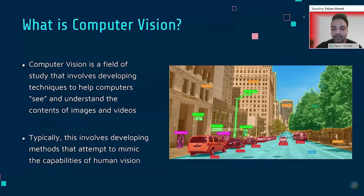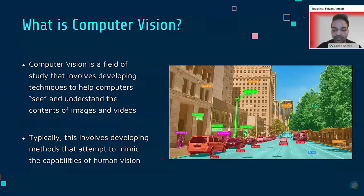So what is computer vision? Computer vision is what allows computers to understand the real world — it involves developing techniques to help computers understand the contents of images and videos. The picture here shows how a self-driving car views its surroundings, detecting the road, vehicles, pedestrians, buildings, and even store signs. We as humans can detect those objects very easily, but for a computer to detect and classify what those things are, it has to be trained extensively.